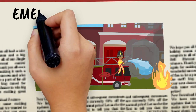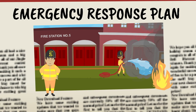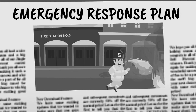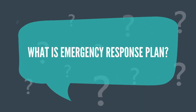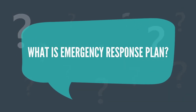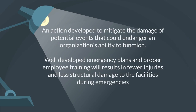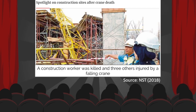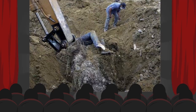Our headline for today is Emergency Response Plan. An emergency response plan is an action developed to mitigate the damage of potential events that could endanger an organization's ability to function. Such a plan and proper employee training will result in fewer injuries and less structural damage to the facilities during emergencies. Let's look at some examples of accidents in the workplace.